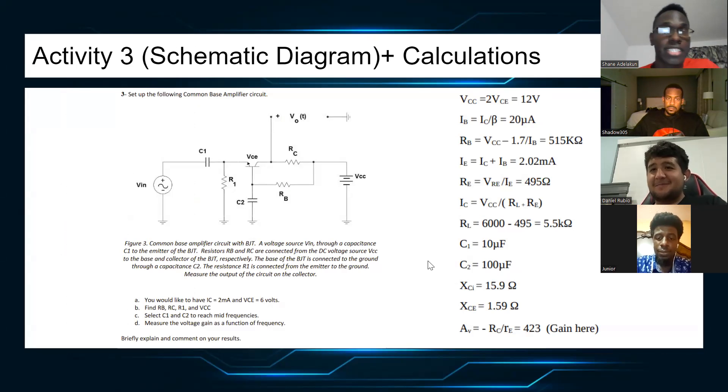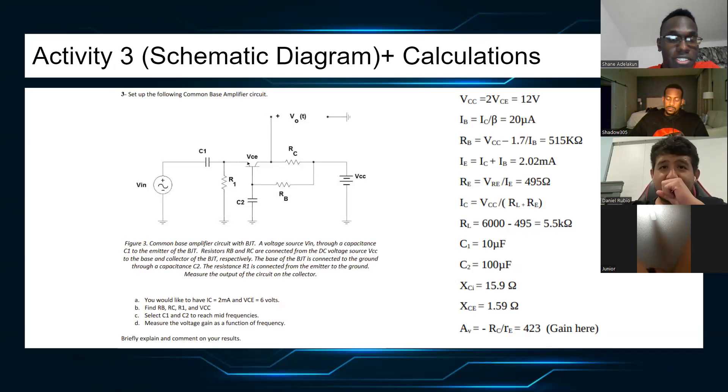This is going to be activity three, the diagram and our calculations. Yet again, same but different circuit. Similar questions we're trying to find here. We're still going to find the IC equal to 2mA and VCE equal to 6 volts. We're gonna find the RB, the RC, the RE, and the VCC. Also, we're gonna find the mid frequencies for C1 and C2. And measure the voltage gain at the mid frequencies.